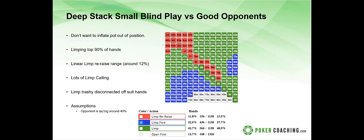This linear limp re-raising range is about 12 percent of hands — nines-plus, ace-jack-plus, suited broadways, suited connectors, some suited one-gappers. These all play well at deep stacks. If you limp and the big blind isos to three and a half big blinds, we're looking at a limp re-raise of around four to four and a half times the raise. We're also doing a lot of limp calling with the green hands.